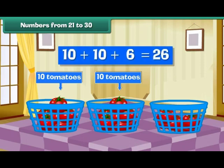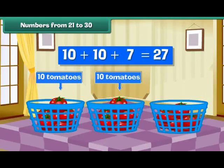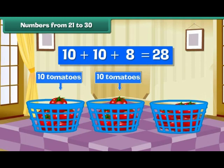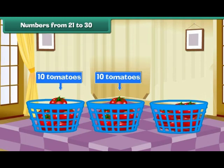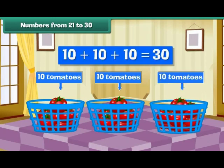Two tens and six make 26. Two tens and seven make 27. Two tens and eight make 28. Two tens and nine make 29. Two tens and ten make three tens — that is 30.